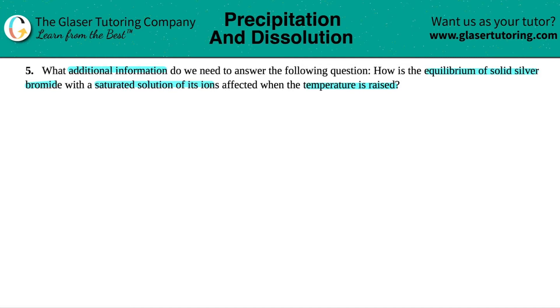So this one's kind of an interesting question. Let's just read it one more time. We want to know how is the equilibrium of solid silver bromide with the saturated solution of its ions affected when the temperature is raised? So basically they told us that we have a saturated solution of the ions of solid silver bromide. Let's just write out what that would be.